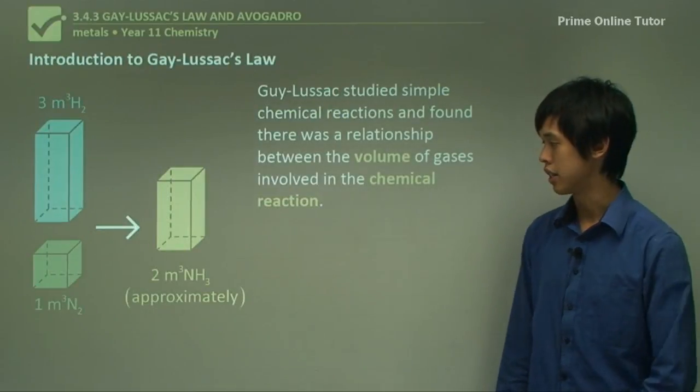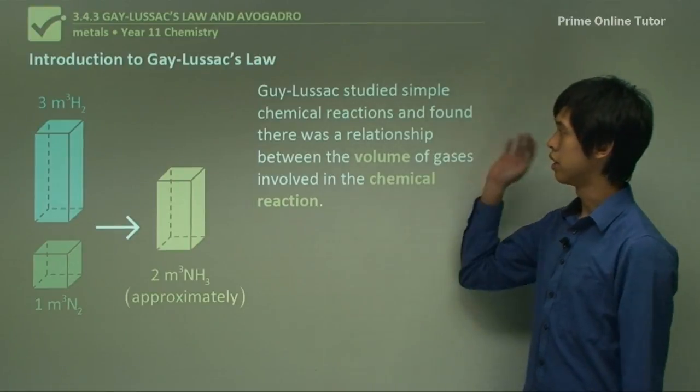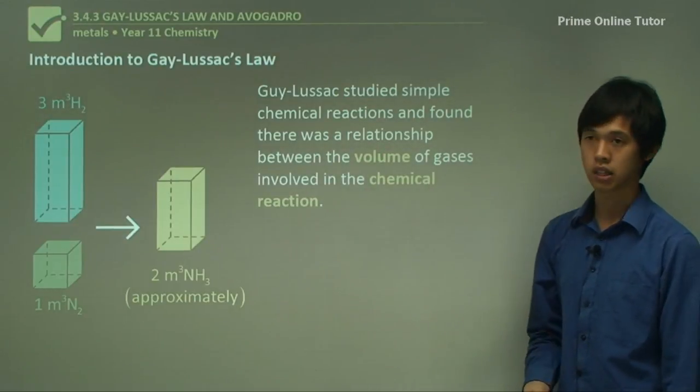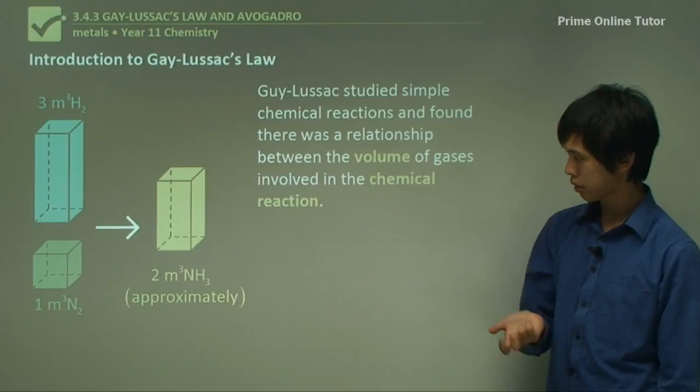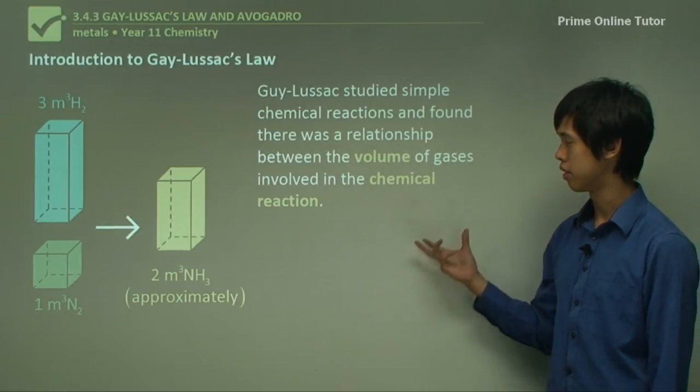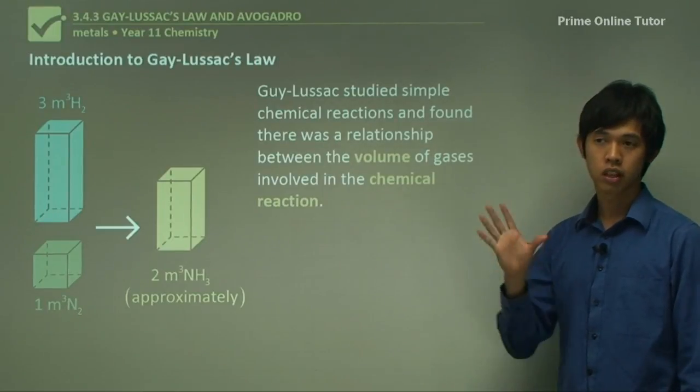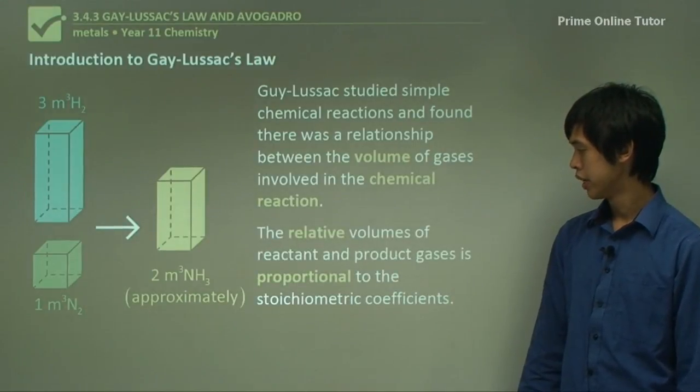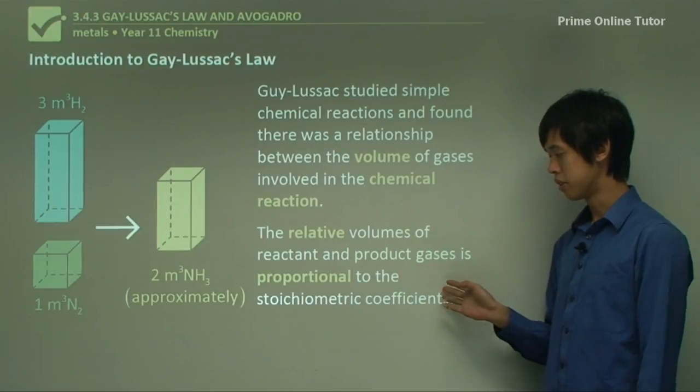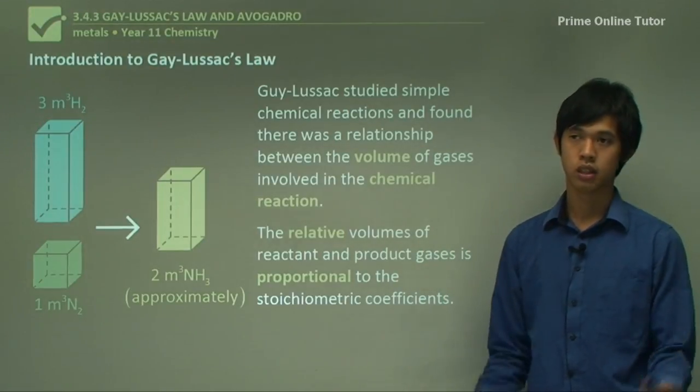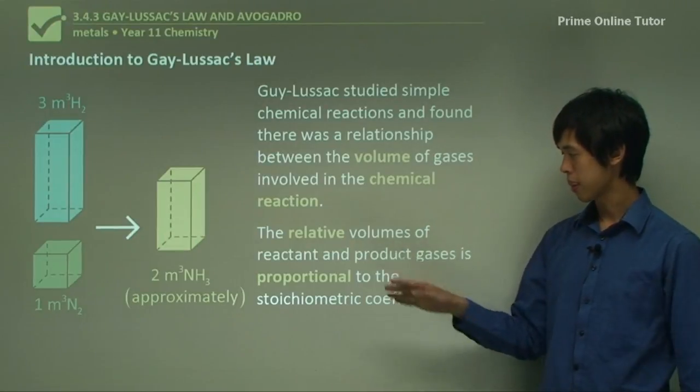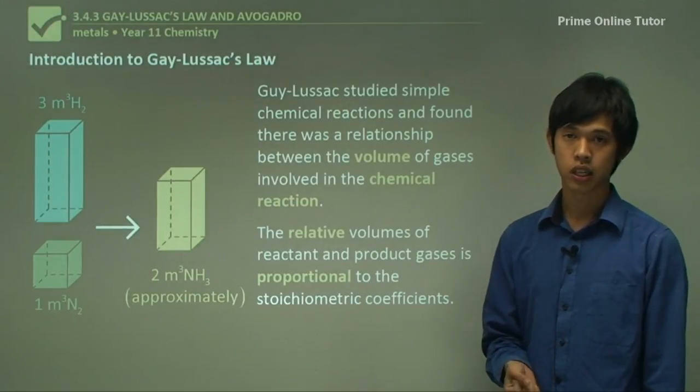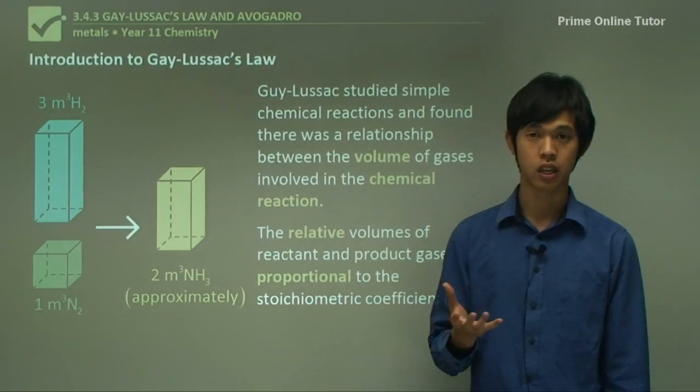So introduction to what it actually is to be Gay-Lussac's law. So Gay-Lussac studied simple chemical reactions and found there was a relationship between the volume of gases involved in the chemical reaction. So he figured out that there was some sort of relationship between the volume of the gas and the chemical equation of the chemical reaction. The relative volumes of reactant and product gases is proportional to the stoichiometric coefficients.